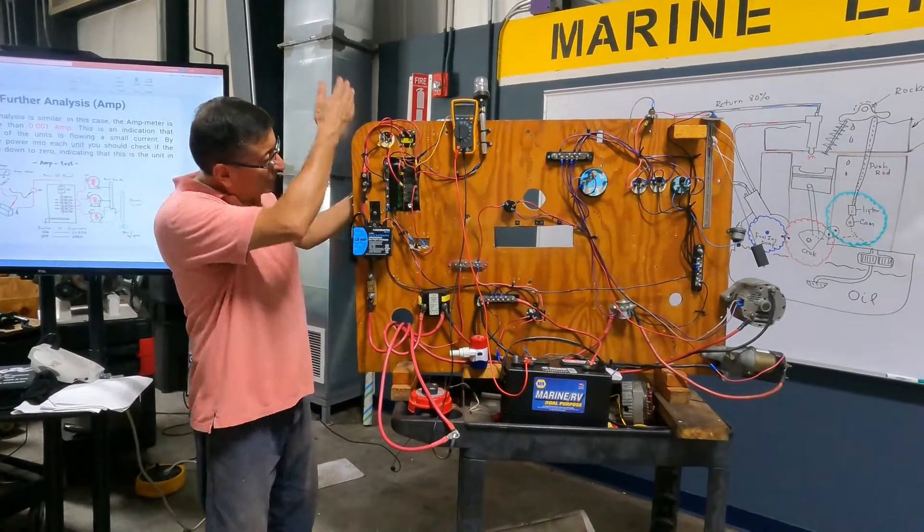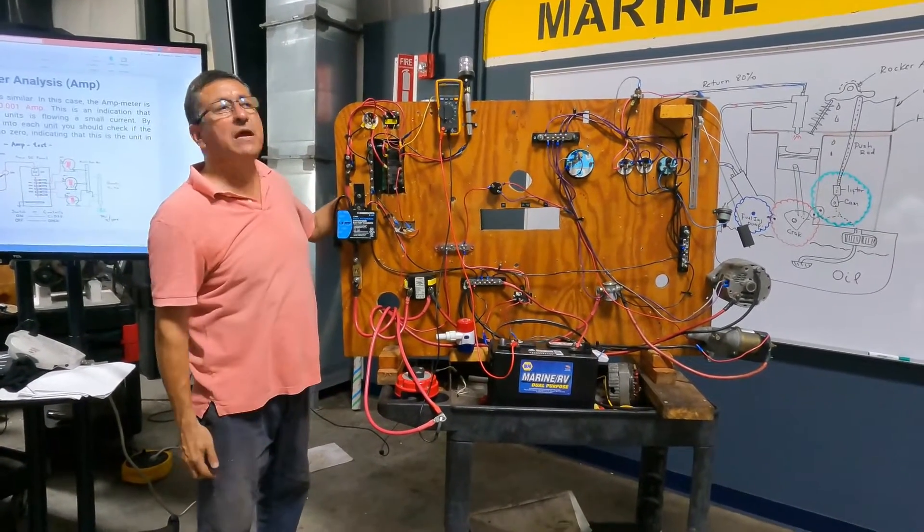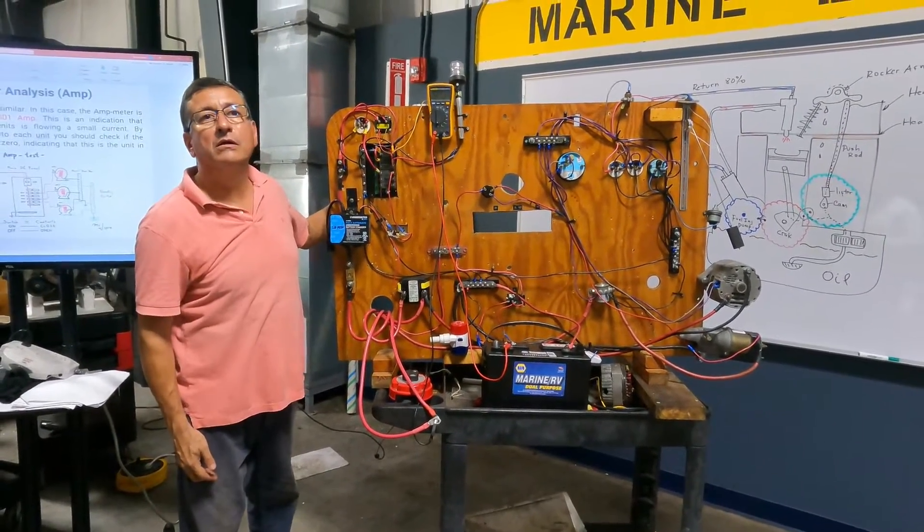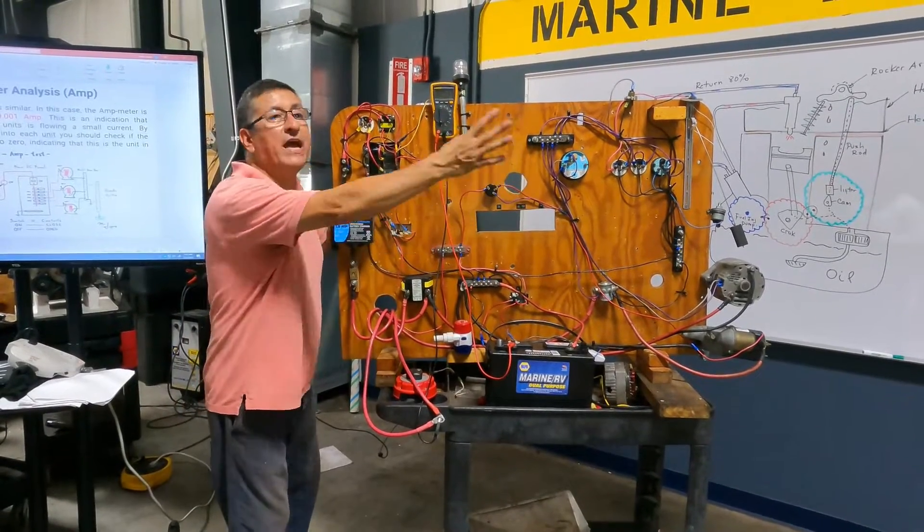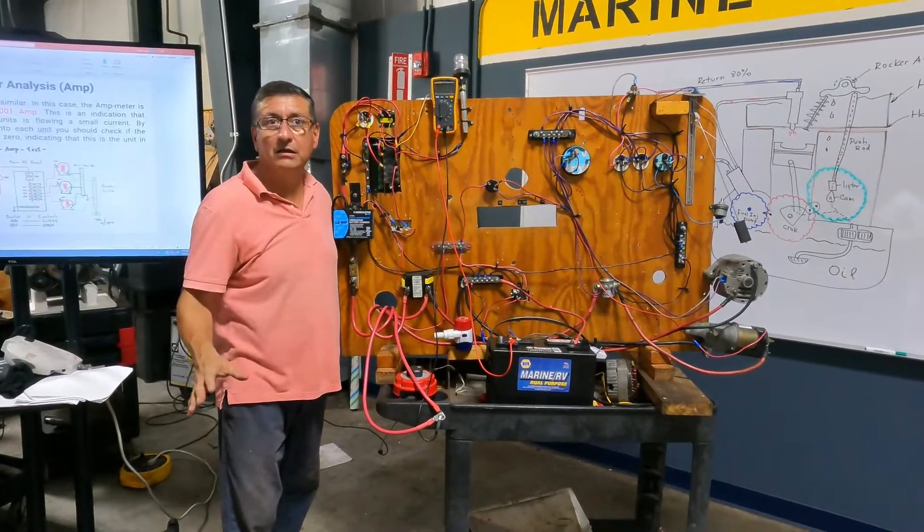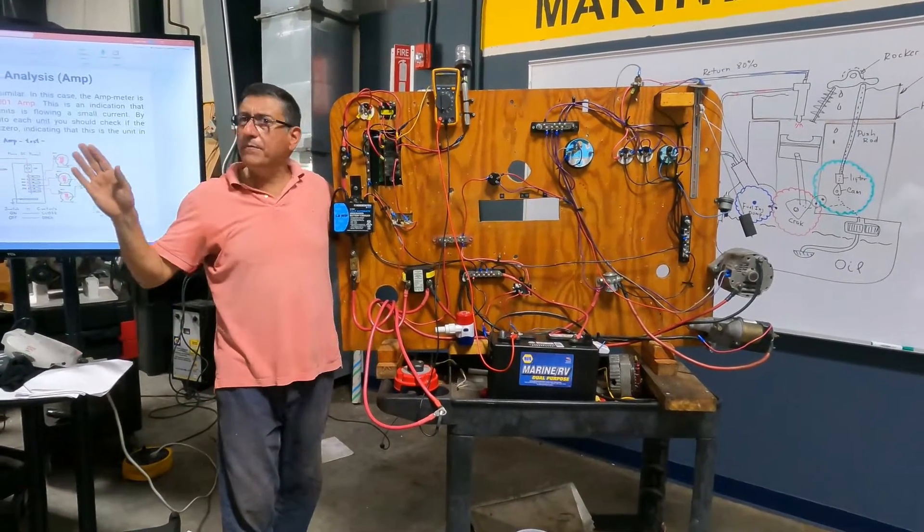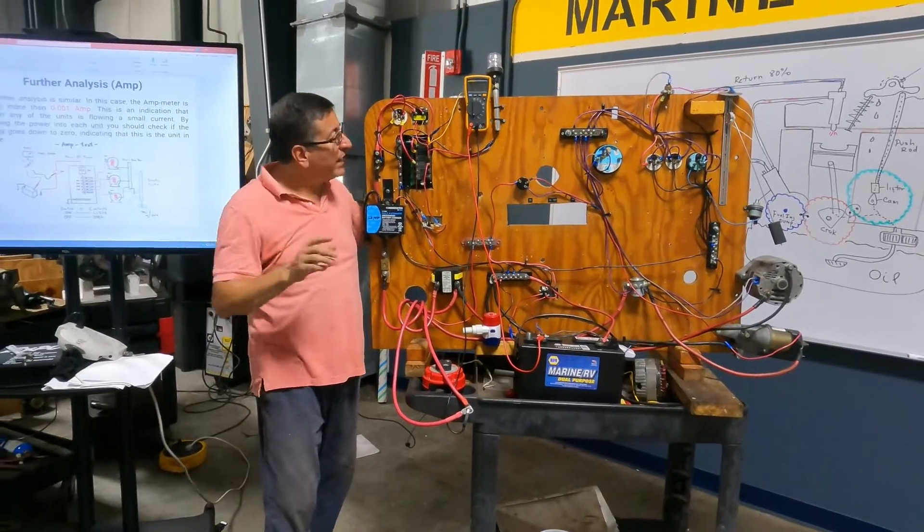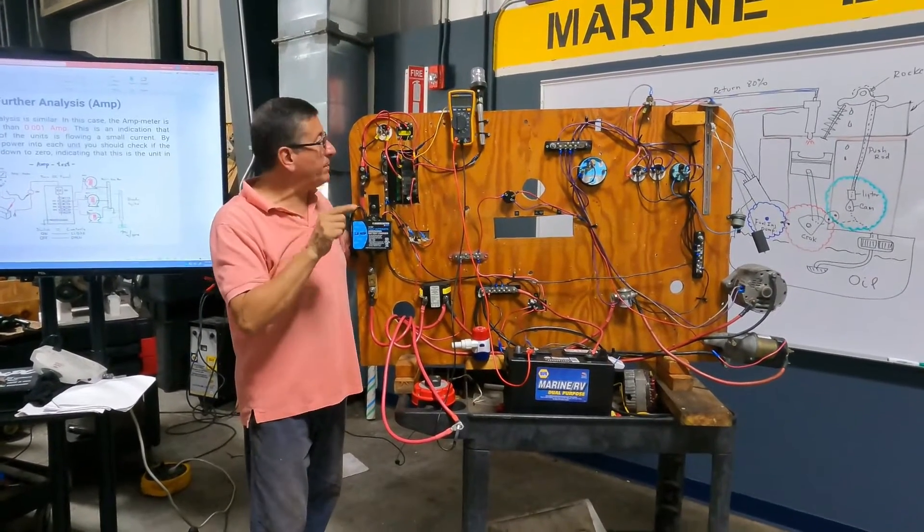Look, this is the total current that is flowing. I put the main breaker on. I put the main breaker on with the rest of the equipment off. And I have 0.2. A lot. But everybody follow me?